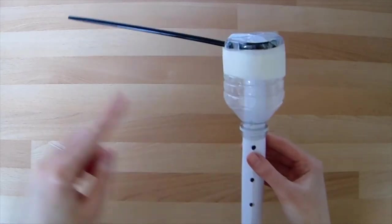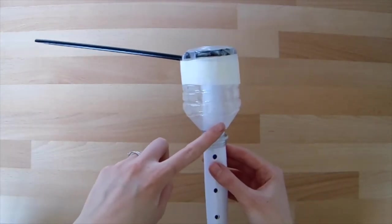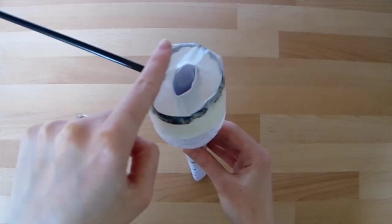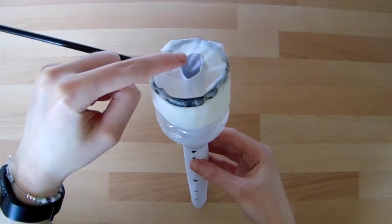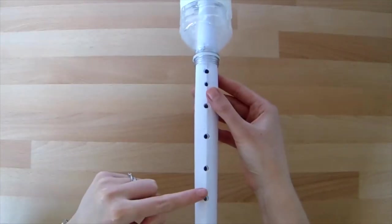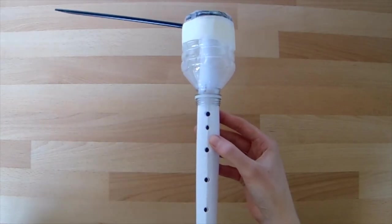So this is our membranophone. It has a straw, part of a plastic bottle, a piece of plastic stretched over the top to make our membrane, and a paper tube that goes from the membrane all the way down with lots of holes punched into it so we can change the pitch of the noise that we make.